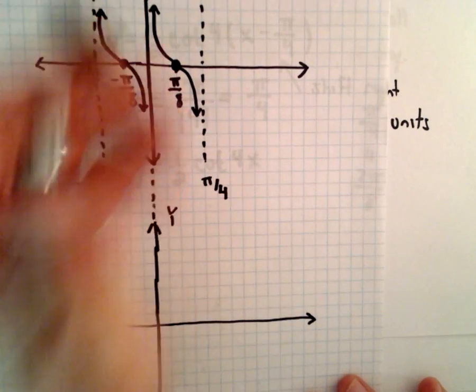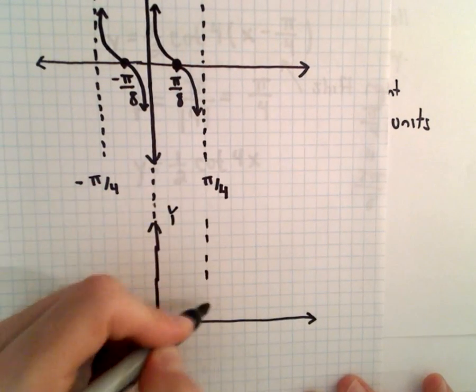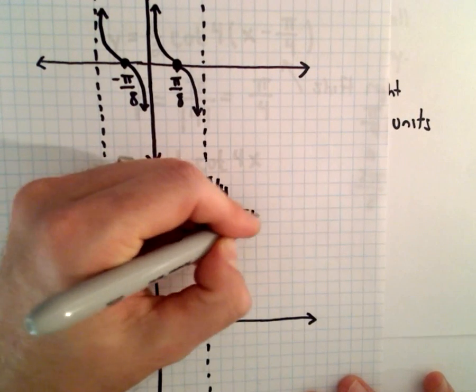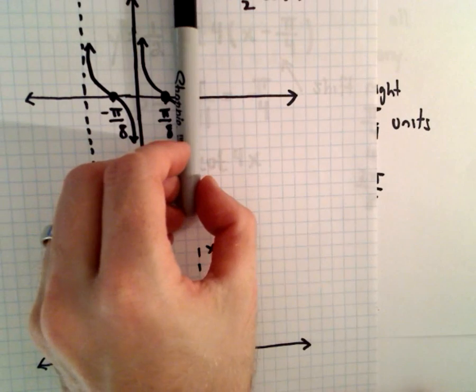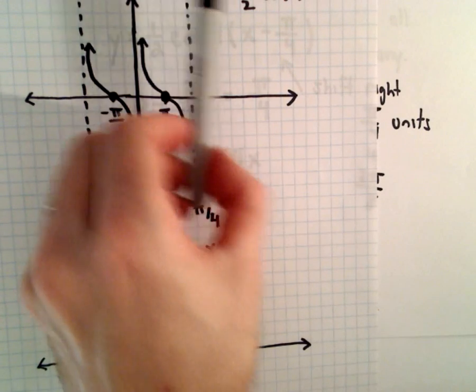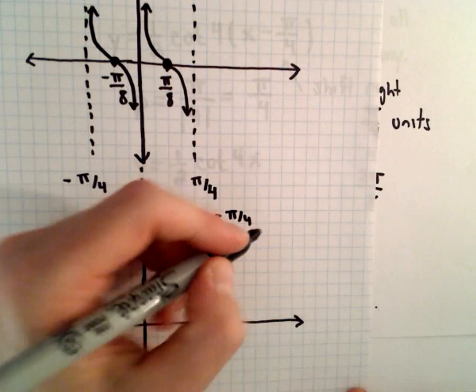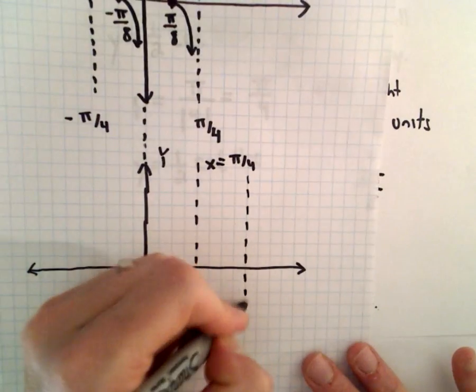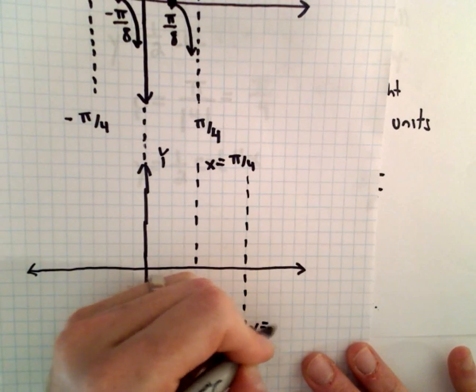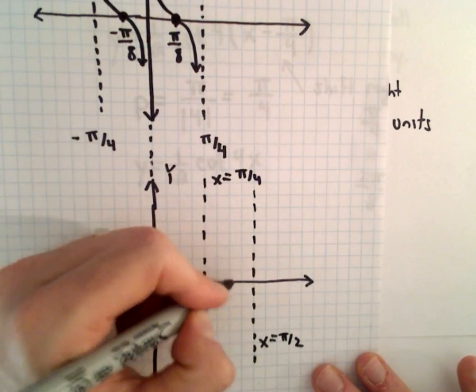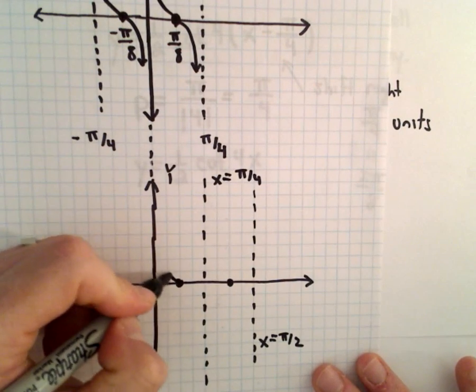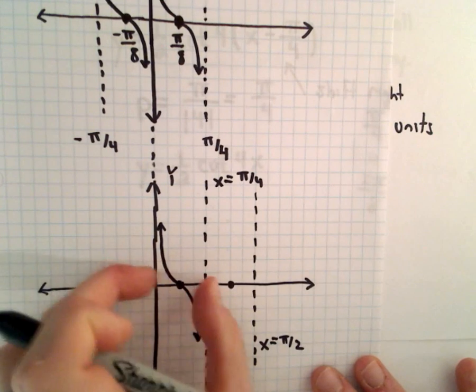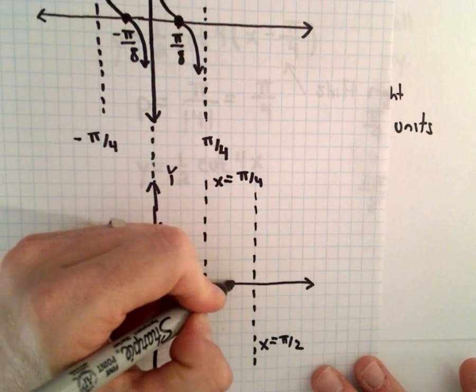The vertical asymptote that we had at x equals 0, that's going to be sitting at x equals pi over 4. The asymptote that we had at x equals pi over 4, we'll move that over. That'll be sitting at 2 pi over 4, or equivalently at x equals pi over 2. So that'll be the asymptote x equals pi over 2. And right in between each of the vertical asymptotes, it'll still cross the x-axis.